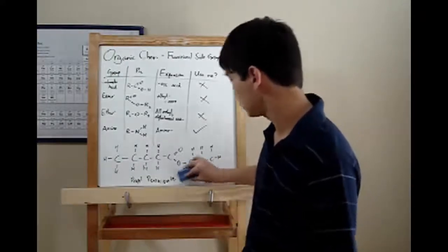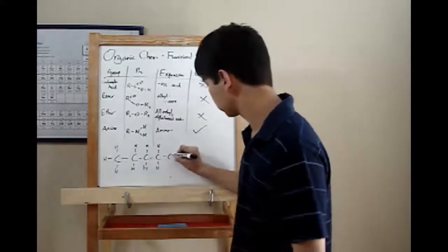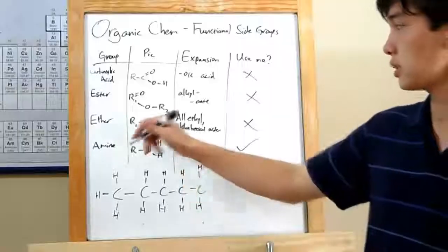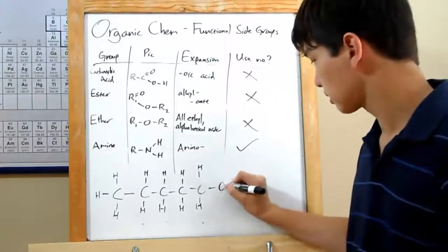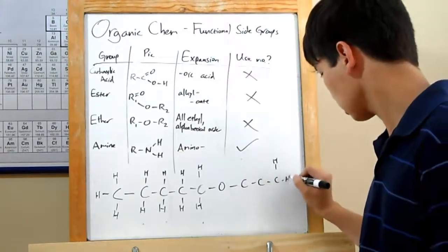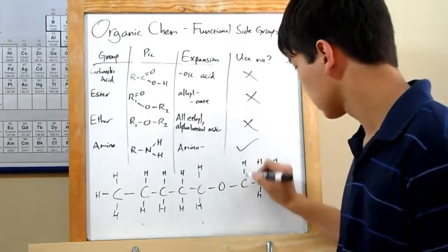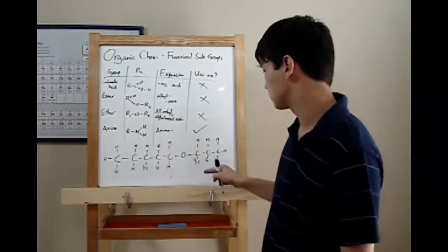All right, now to something slightly less difficult. The ether. This is one carbon chain, an O in the middle, and then another carbon chain. So we can just use our triple C again. In this case, we're going to call all of these by their alkyl group names. So, and then we're going to alphabetize them.